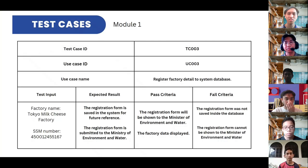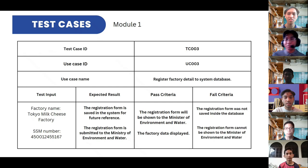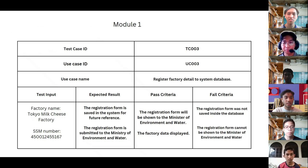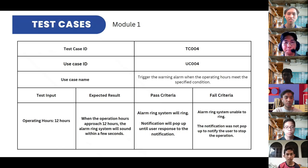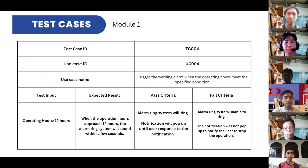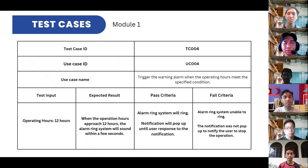For our test cases: the first is we register factory data to the system database — you can see the test input, expected result, pass criteria, and fail criteria. The second test case is to trigger the warning alarm when the operating hours meet the specified condition.